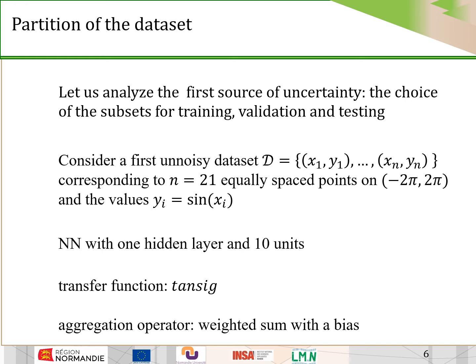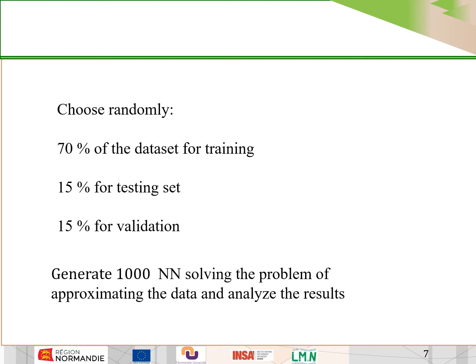In this test, we consider noiseless data corresponding to 21 equally-spaced points and the values of sin(x). We use a neural network with one hidden layer and 10 units. The transfer function is tanh and the aggregation operator is the weighted sum with a bias. We randomly choose the data sets for training, testing, and validation with given proportions. We generated 1000 neural networks and analyzed the results.